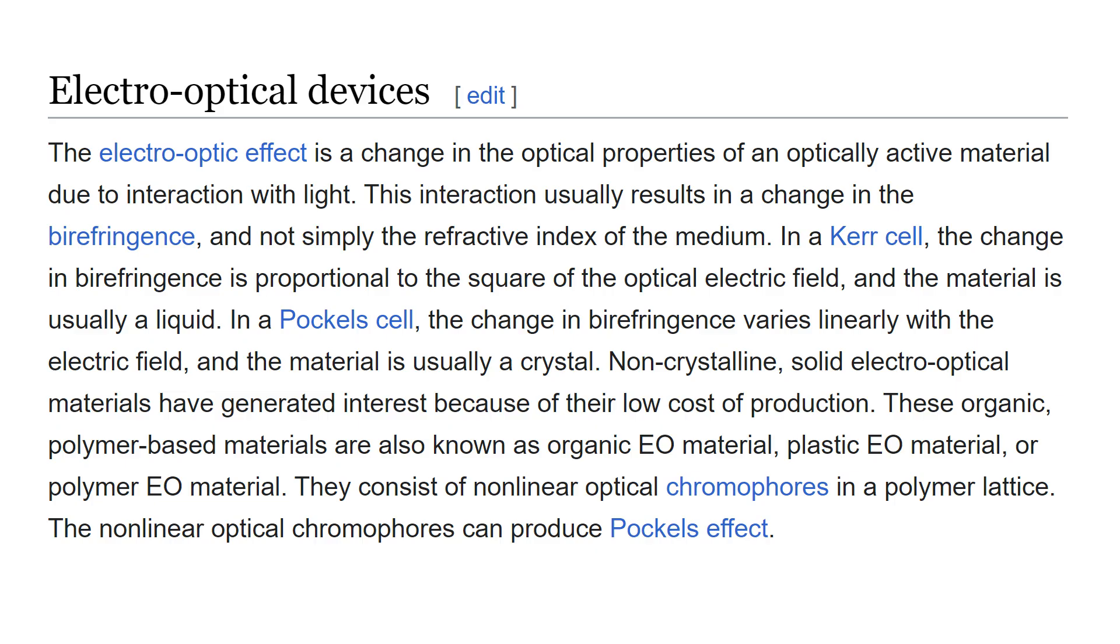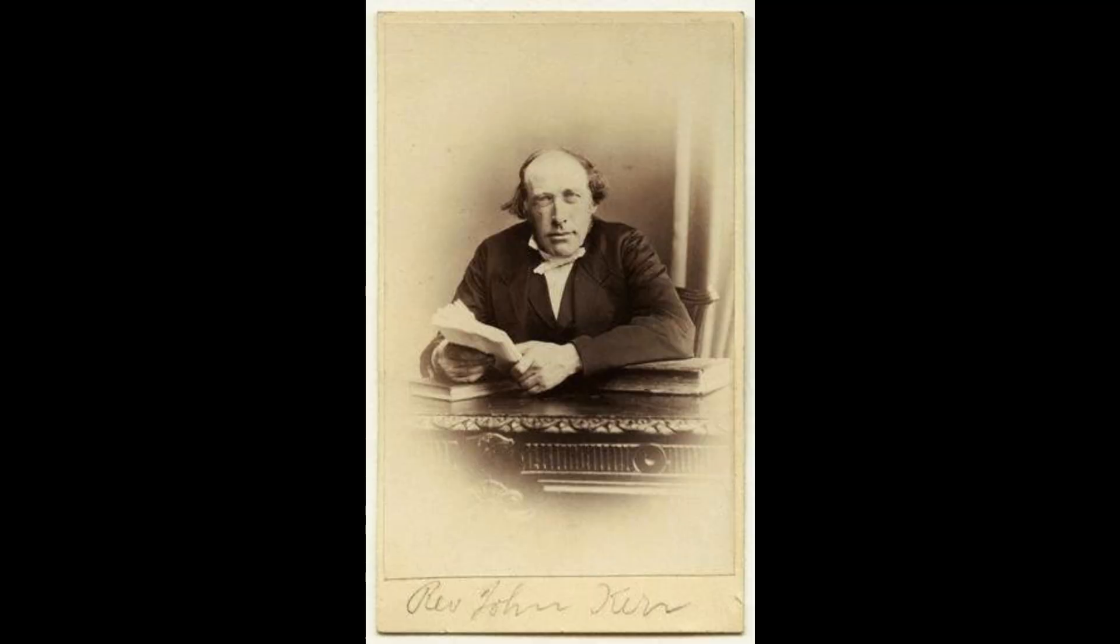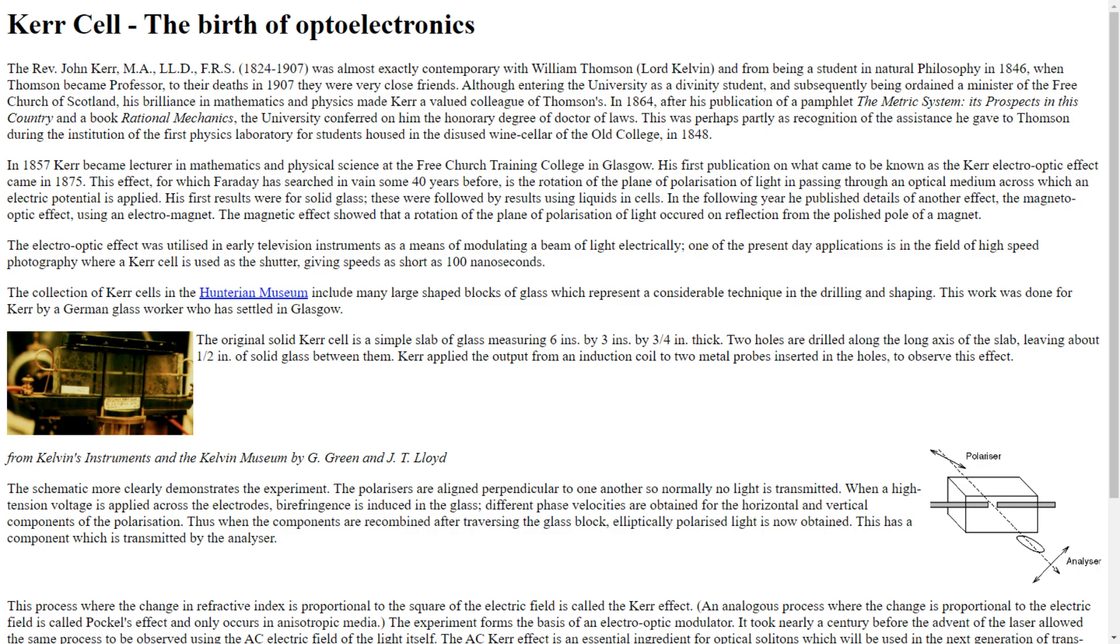The earliest effect to make use of electric fields was the electro-optic Kerr effect, and this was discovered by the Scottish physicist John Kerr in 1857. This effect, which Faraday had searched for for decades previously, is the rotation of the plane of the polarisation of light in a material across which an electric field is applied as opposed to a magnetic field.